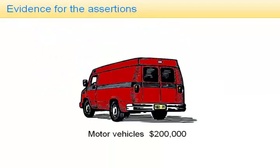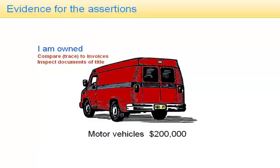So if we were looking for evidence to support the assertions made by the presence of $200,000 motor vehicles in the financial statements, the presence of $200,000 is proclaiming that those motor vehicles are owned. How do we know they are owned and not simply rented and sitting in a car park? Well, we could compare or trace from invoices for a new van to make sure they had been purchased. We could inspect documents of title — in most countries, vehicles are registered with a government agency and some sort of document or evidence of title exists.